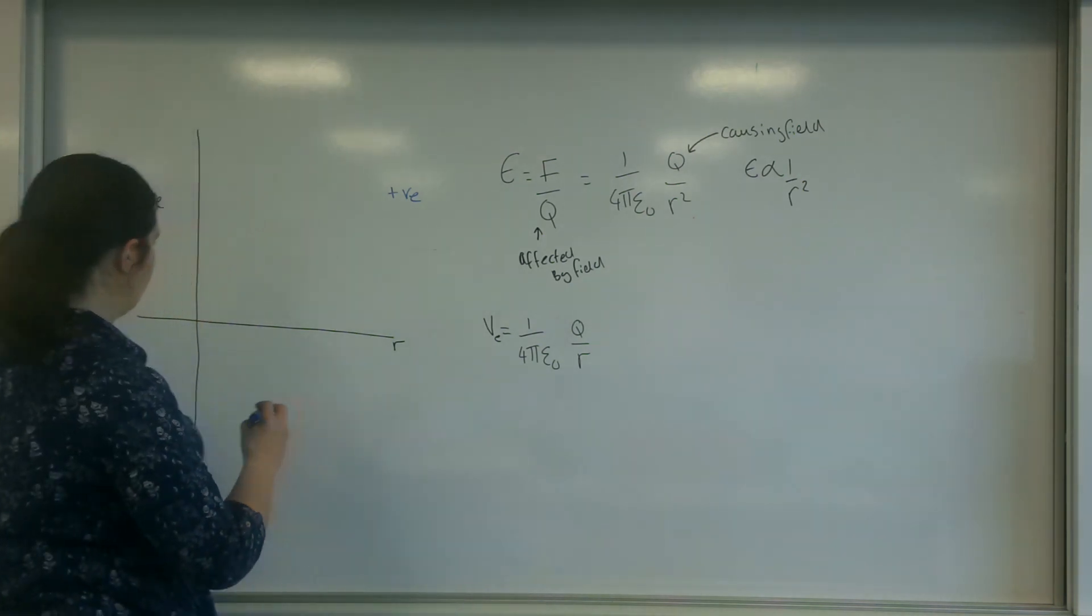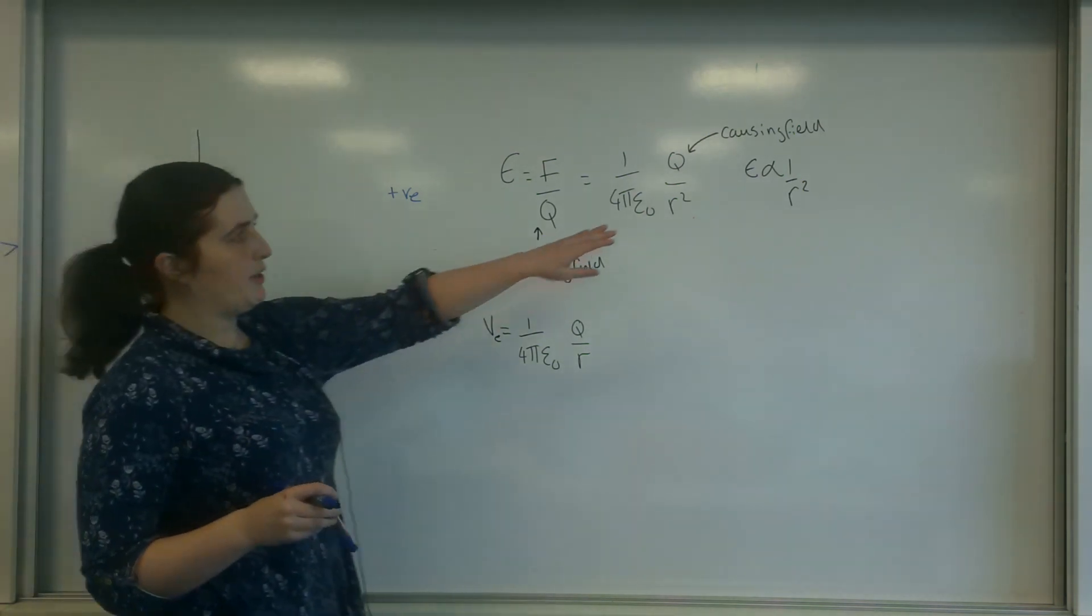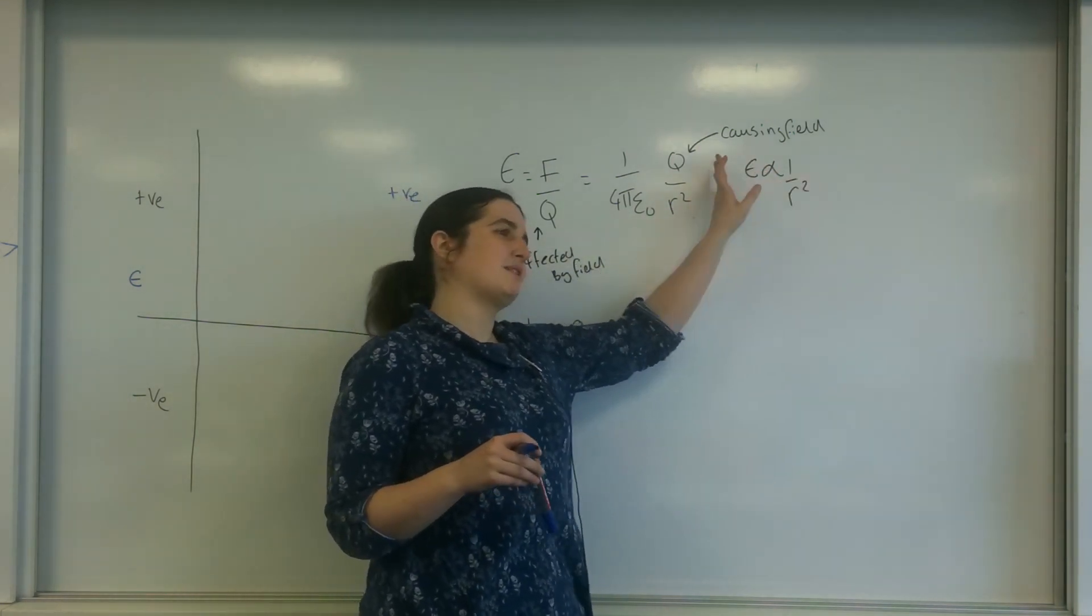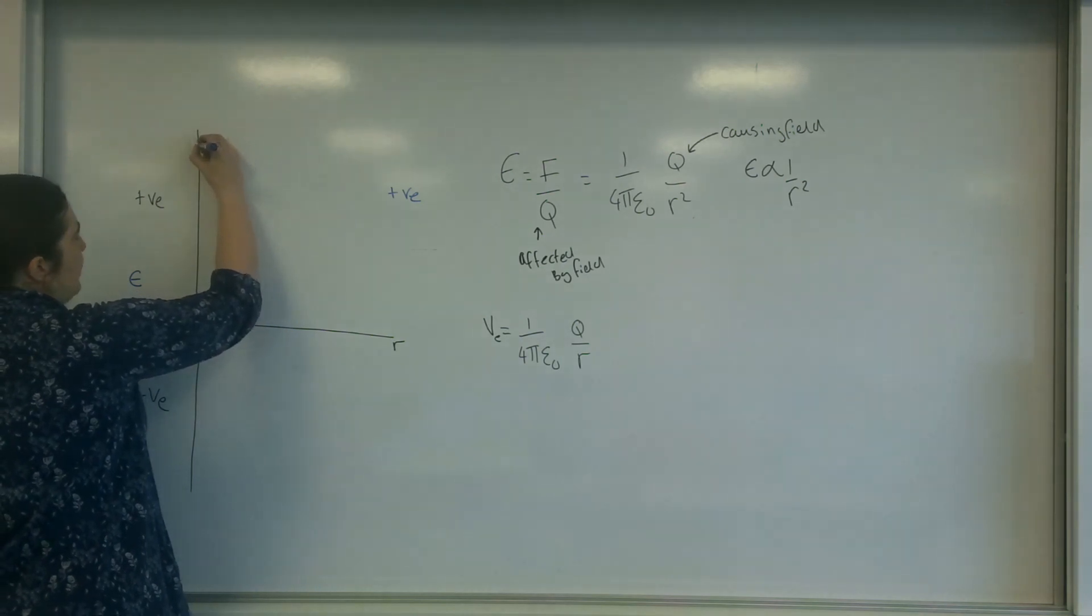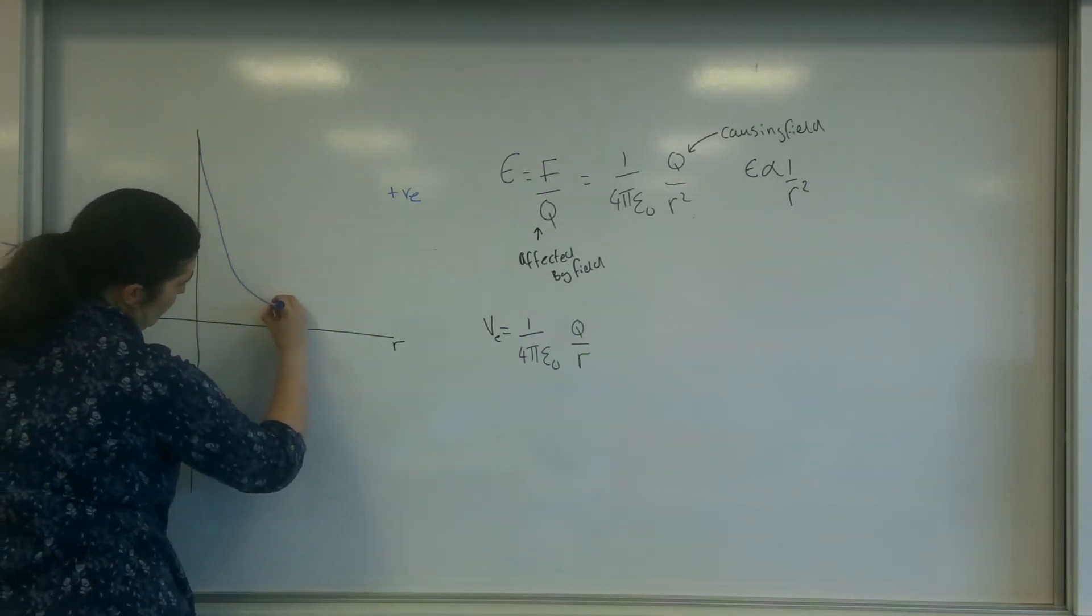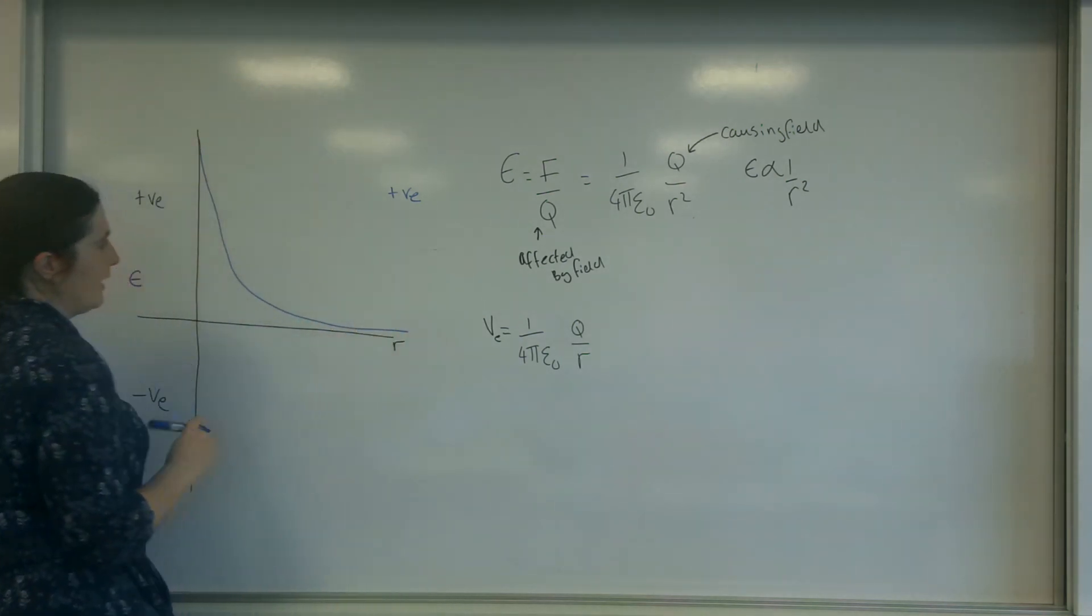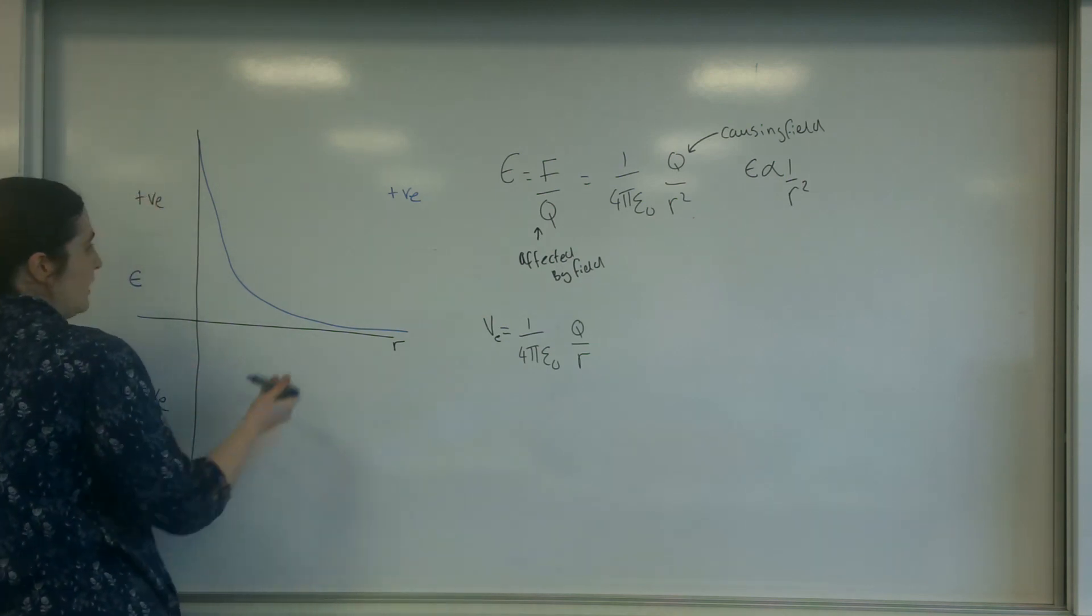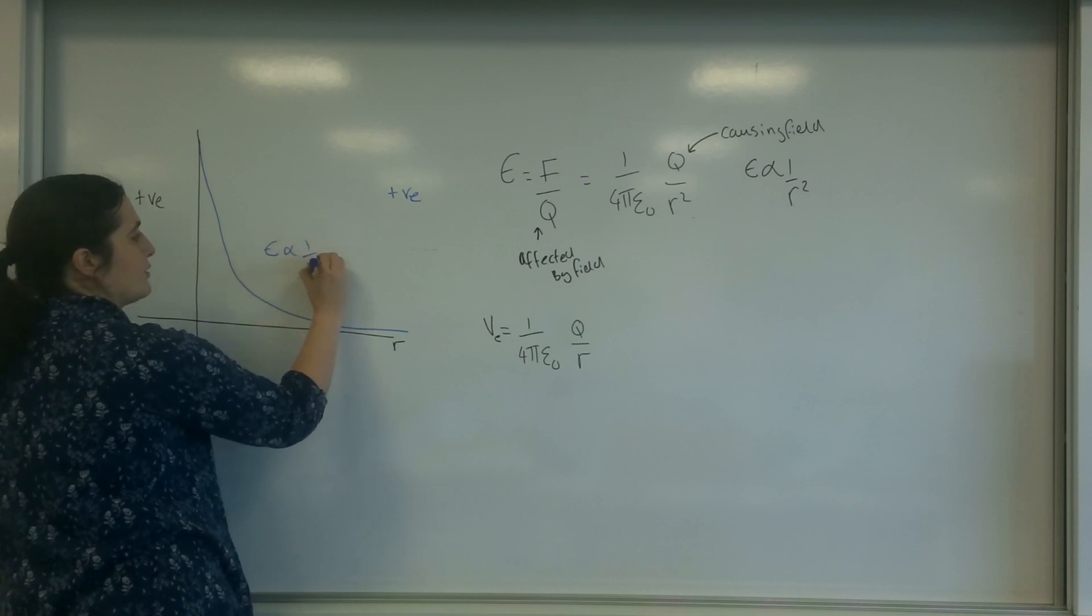So if I look at this here, as this gets bigger and bigger and bigger, as r tends to infinity, this will tend to zero. It would look like this. So this here is that E is proportional to 1 over r squared.